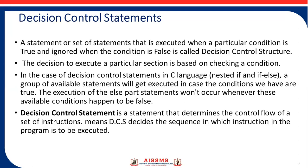Decision Control Statement: a statement or a set of statements that is executed when a particular condition is true and ignored when the condition is false. It is called Decision Control Structures. The decision to execute a particular section is based on checking a condition. In C language, nested if and if-else — a group of available statements will get executed when the conditions are true, and the else part will not execute when conditions are false. Decision Control Statement determines the control flow of a set of instructions and decides the sequence in which instructions in the program are to be executed.